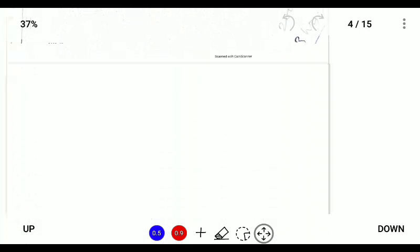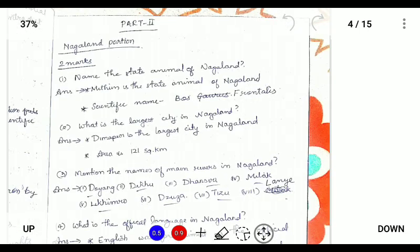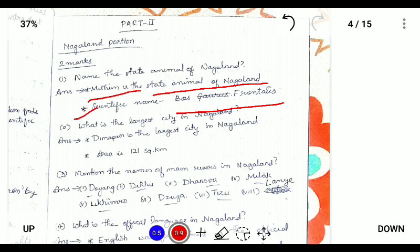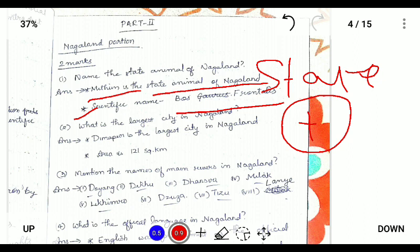Question number one: name the state animal of Nagaland. The state animal of Nagaland is Bos frontalis, also known as Mithun. It is the state animal of Nagaland and one important point is that it is also used in the state government emblem as a symbol of wealth and prosperity.